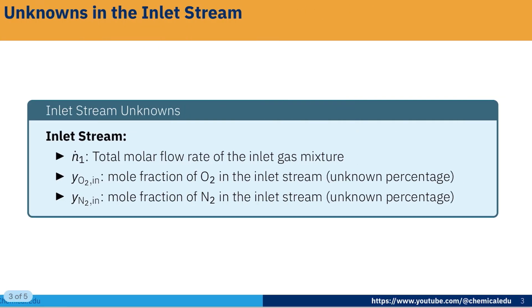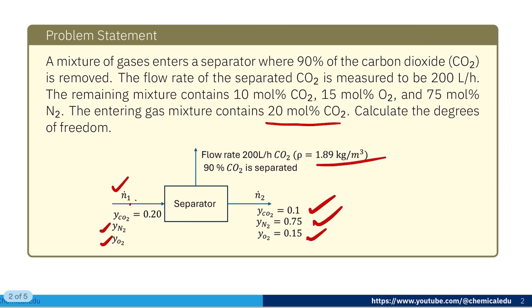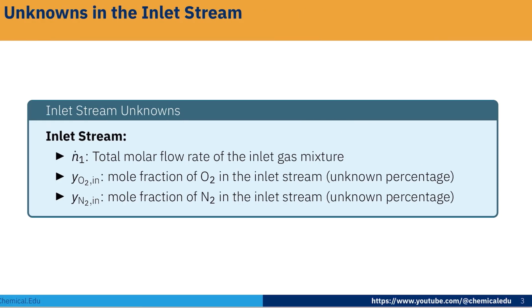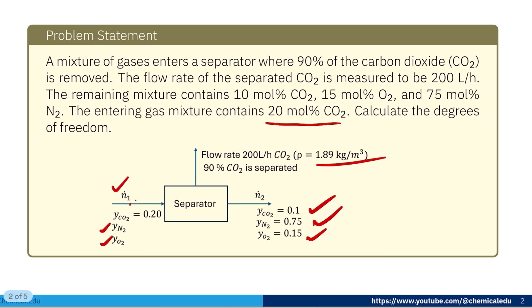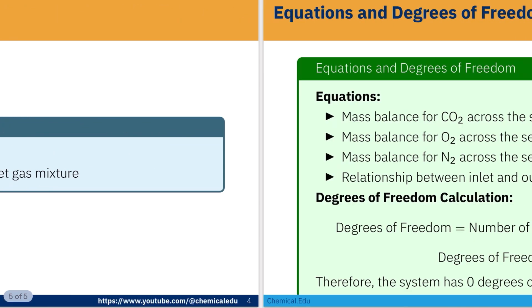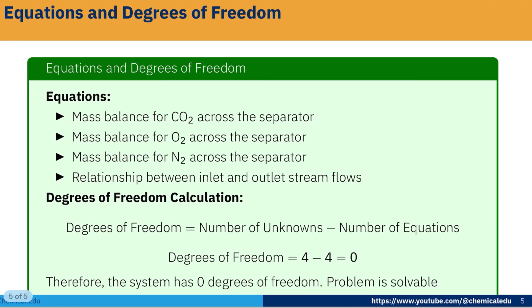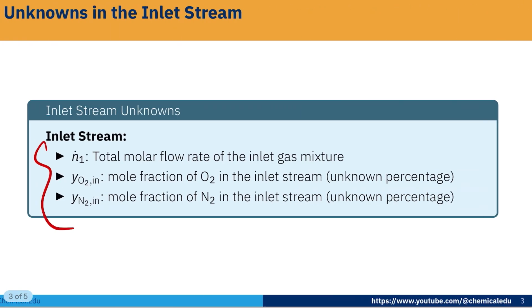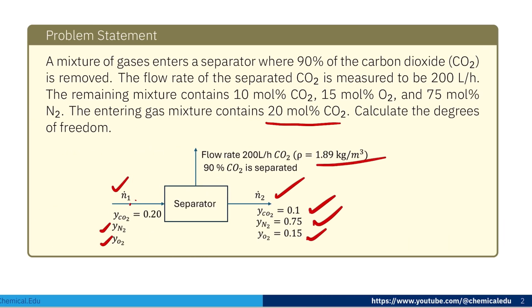Now we have to calculate the degree of freedom. At the inlet stream, the unknowns are N₁, y_N₂, and y_O₂ — so three unknowns at the inlet. At the outlet there is one unknown, N₂. So the total number of unknowns is four. To solve this problem we need four equations.